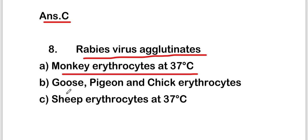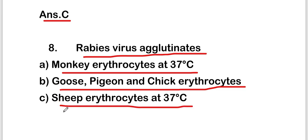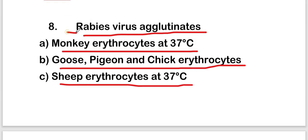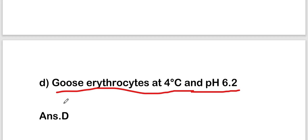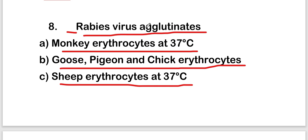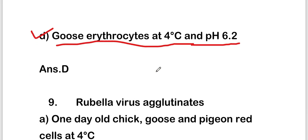The next question is: rabies virus agglutinates which of the following? Options are monkey erythrocytes at 37°C; goose, pigeon, and chick erythrocytes; sheep erythrocytes at 37°C; or goose erythrocytes at 4°C and pH 6.2. The right answer is option D — rabies virus agglutinates goose erythrocytes at 4°C and pH 6.2.